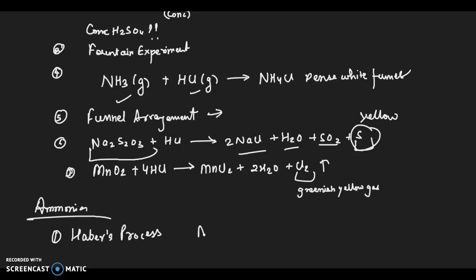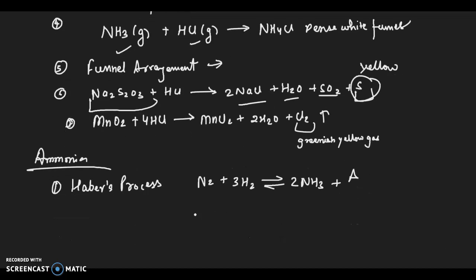You have to write all the favorable conditions like the temperature which is between 450 to 500 degrees Celsius, then the pressure that should be above 200 atm, and then catalyst that is finely divided iron, and then promoter, traces of molybdenum.